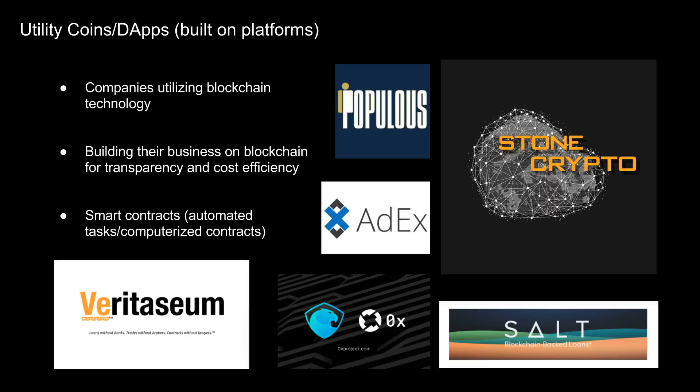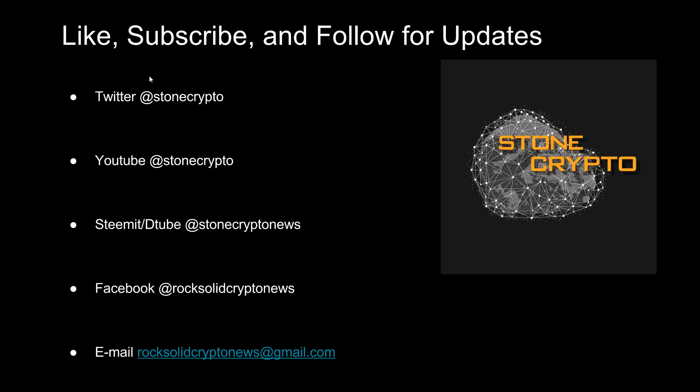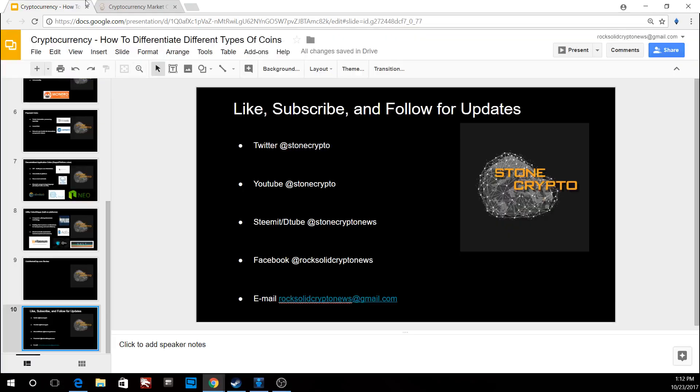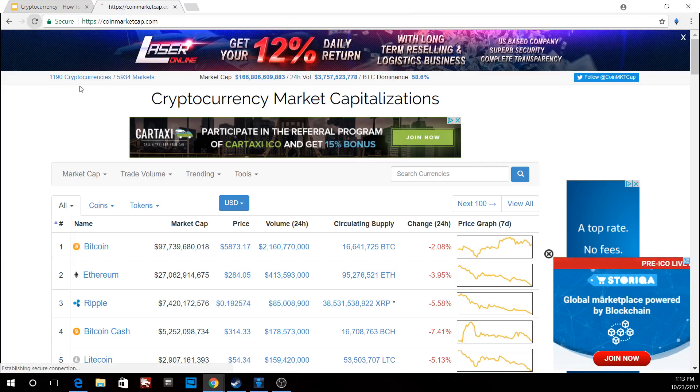Other utility coins include Veritaseum, a peer-to-peer universal exchange; 0x; and Salt Lending as well. Now let's review CoinMarketCap and take a look at some of these coins.